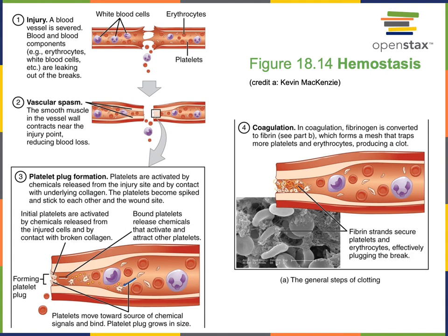In the next step, activated platelets start to stick together and bind to the exposed collagen in the damaged blood vessel wall. As the platelets become activated, they release chemical signals that stimulate more platelets to become activated in a positive feedback mechanism, until a platelet plug forms to stop the bleeding. Step three is coagulation, where the plasma protein fibrinogen becomes fibrin and forms a network of fibrous protein to reinforce the platelet plug and stabilize the blood clot.